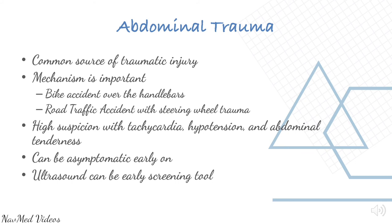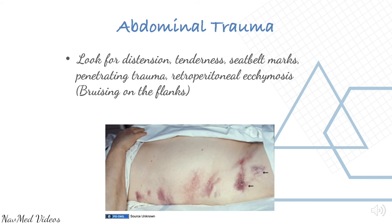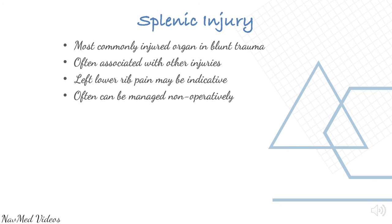Abdominal trauma is a common source of traumatic injury and mechanism is important — bike accident, road traffic accident. High suspicion if the patient has tachycardia, hypotension, and abdominal tenderness. It can be asymptomatic early on, and ultrasound can be an early screening tool. Look for distension, tenderness, seat belt marks, penetrating trauma, and retroperitoneal ecchymosis — bruising on the flanks. Splenic injury is the most common injured organ in blunt trauma, often associated with other injuries, and often can be managed nonoperatively.